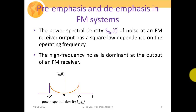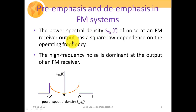Now we are going to discuss about pre-emphasis and de-emphasis in the FM system. The power spectral density, given as N₀(f), which is basically the function of frequency of noise at the FM receiver output, has a square law dependence on the operating frequency. This is actually a close observation of our high frequency noise. Hopefully you all know about the power spectral density from your signals and systems subject.